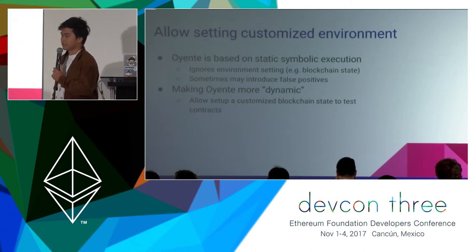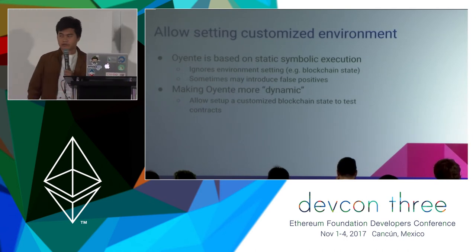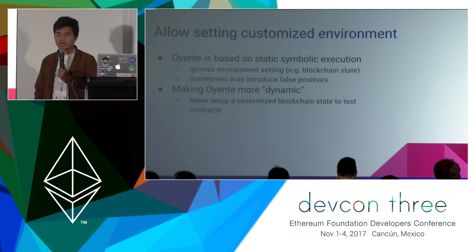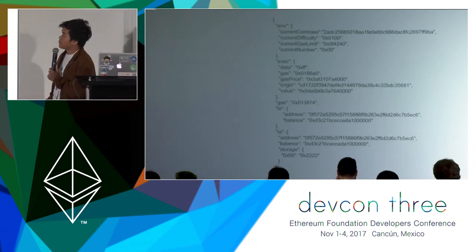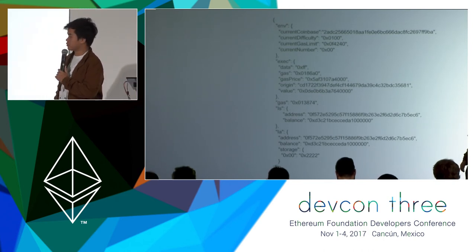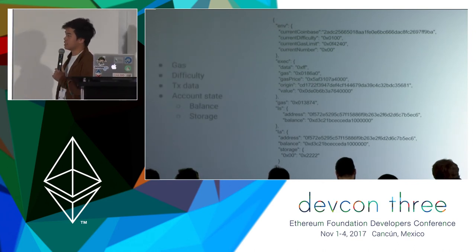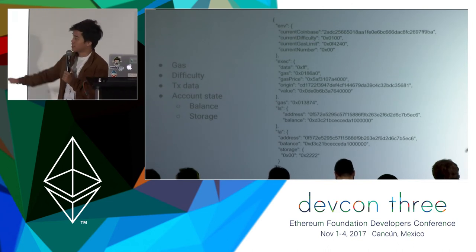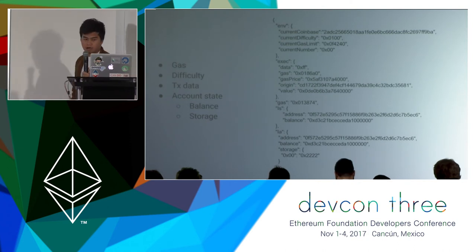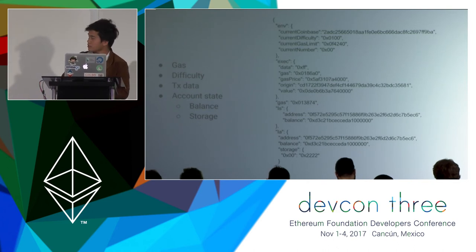With Oriente, we allow the user to set up a customized blockchain environment. When this contract calls another contract, Oriente will go to that contract as well and analyze it. You can specify the gas limit, the difficulty of the block, the transaction data that you want to send to the function, and also the account state including the balance and the storage of some account.